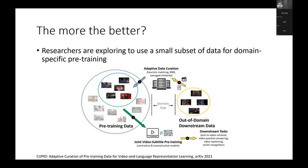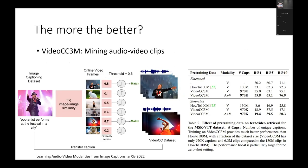On the other hand, people also explored whether we can use less pre-training data and still get better results. Researchers tried data curation to use a small subset for domain-specific pre-training, finding it is usually helpful. A recent preprint also tried data curation with the key idea of transferring image captions to video captions. Their experiments show they can use less than one million data samples for pre-training and still achieve very good results.